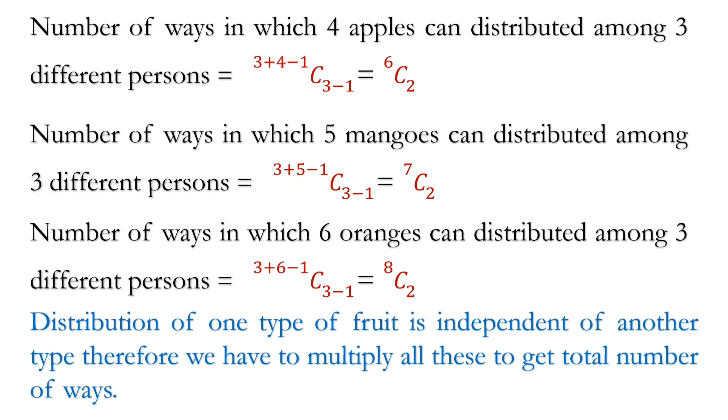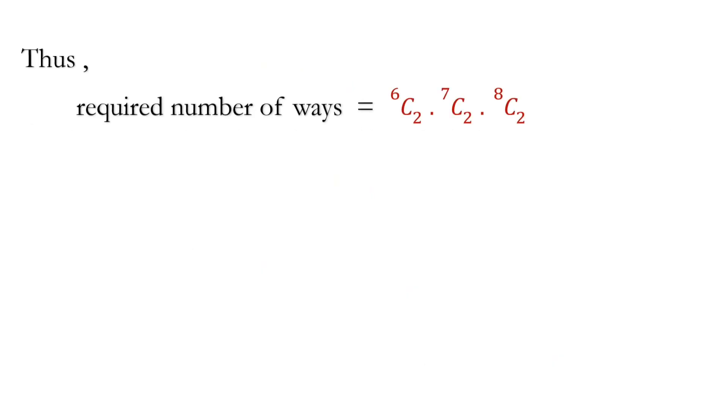Thus the required number of ways can be obtained by multiplication. And we get the required number of ways is equal to 8820. And this is our solution.